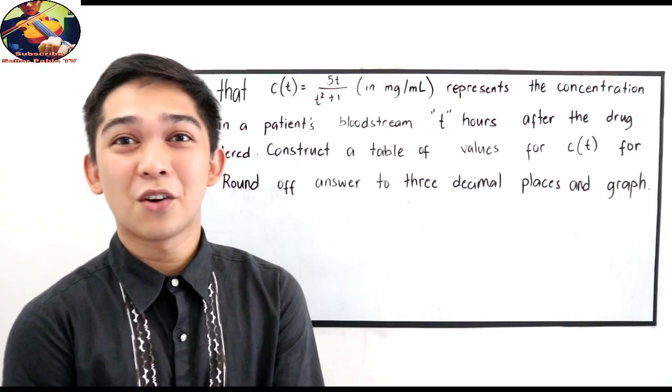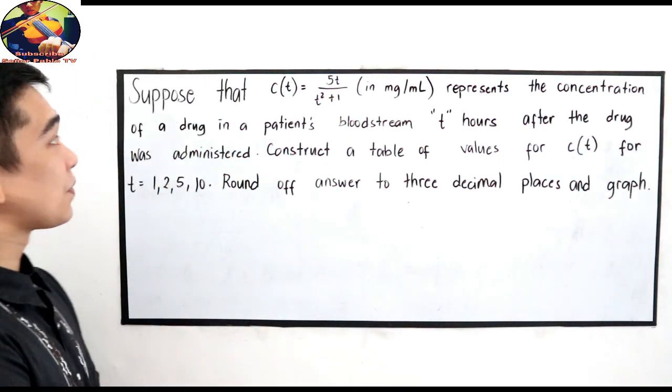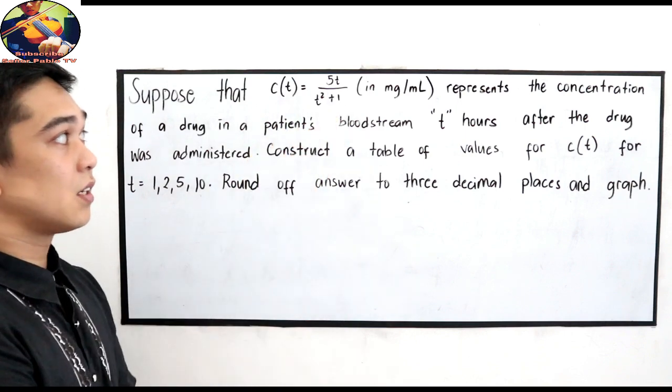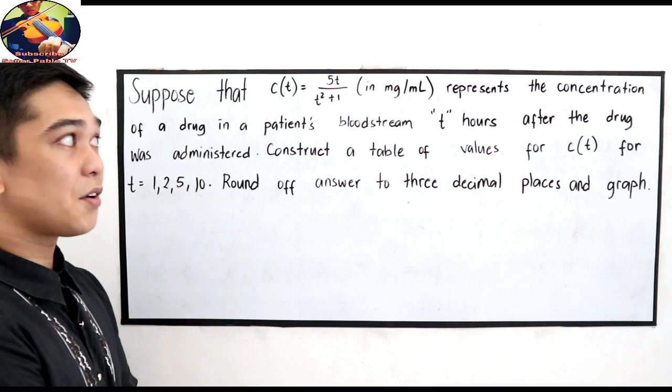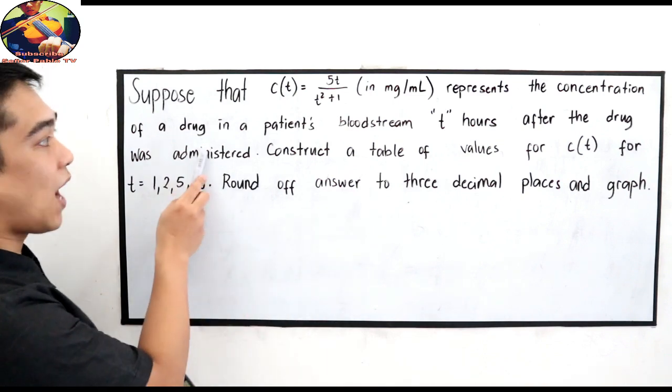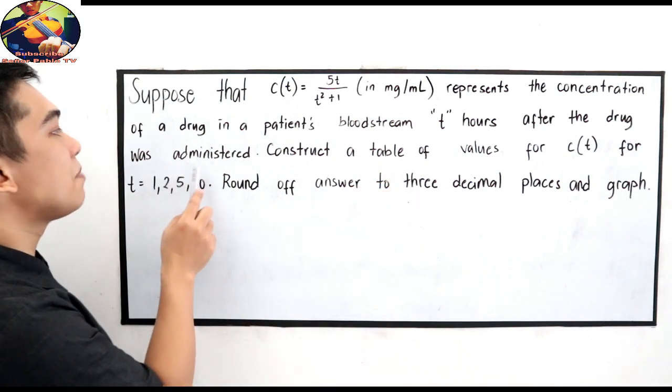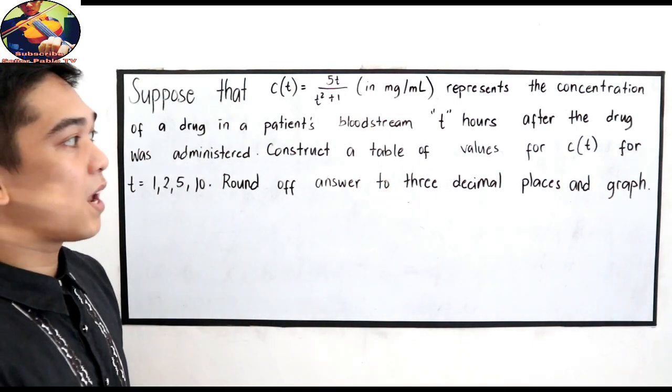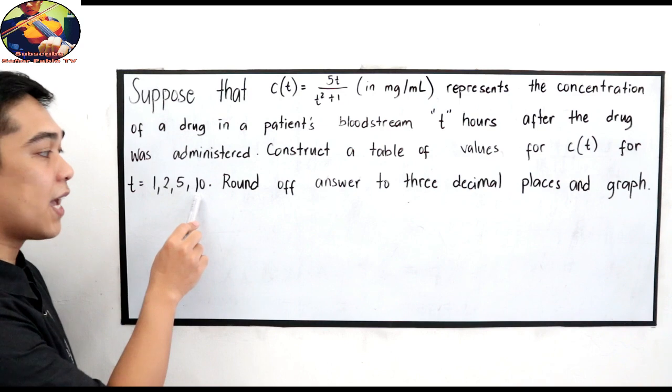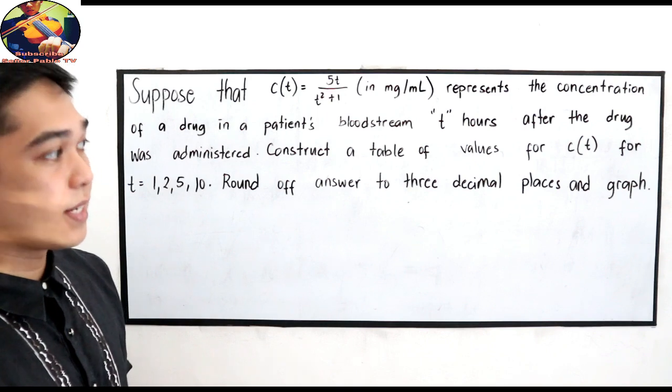And now, let's try to solve some application of rational functions. Let's say we have, suppose that C of T is equal to 5T all over T squared plus 1 in milligram per milliliter. Represents the concentration of a drug in a patient's bloodstream T hours after the drug was administered. Construct a table of values for C of T for T is equal to 1, 2, 5, 10 round off answers to 3 decimal places and graph.